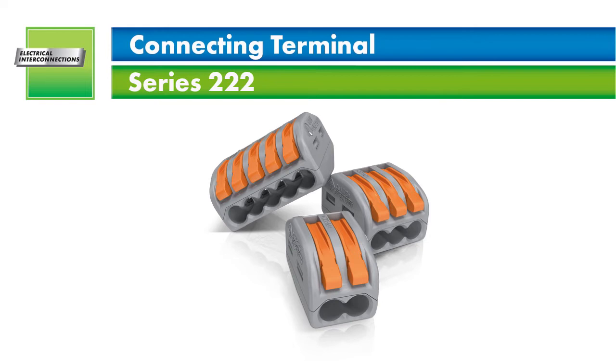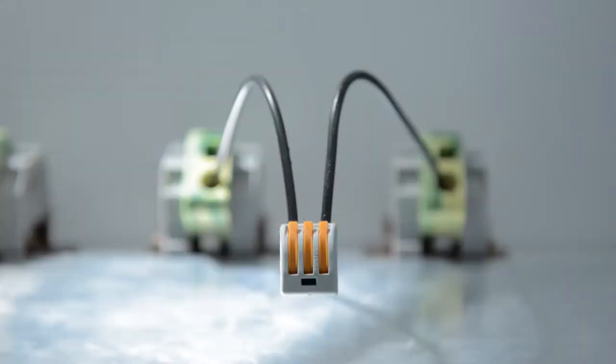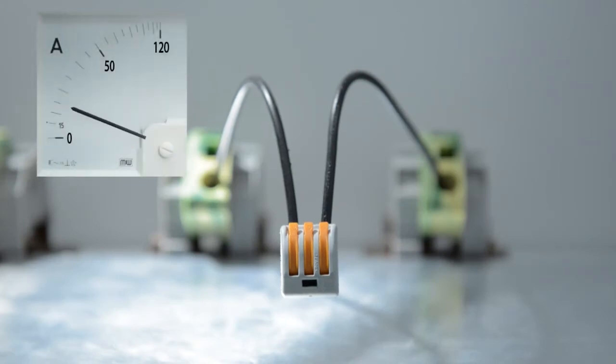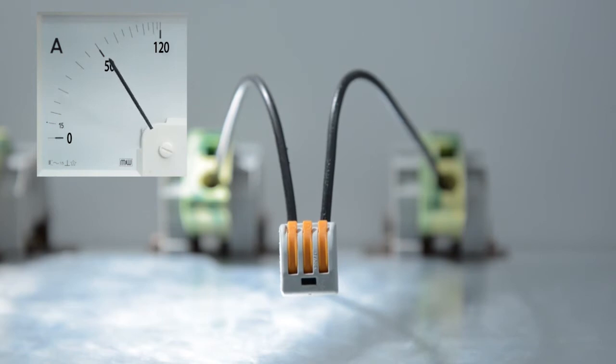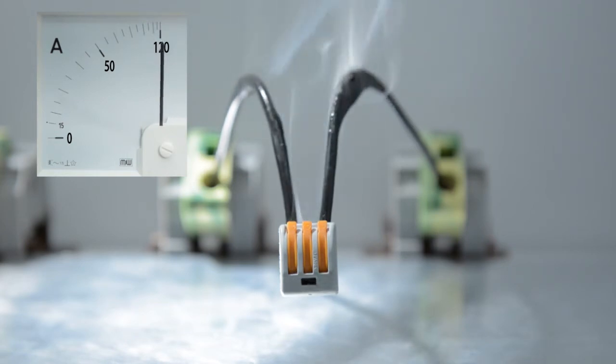The 222 series connectors are designed for a nominal current of 32 amps. All of these connectors not only exceed the relevant normative requirements, but also provide an additional safety range compared to the normative minimum requirements. This safety range reflects WAGO's high quality requirements while providing maximum safety even in exceptional circumstances.